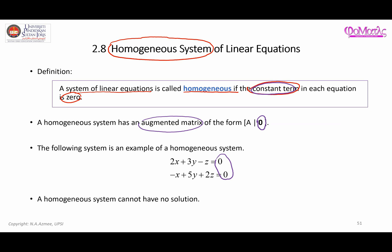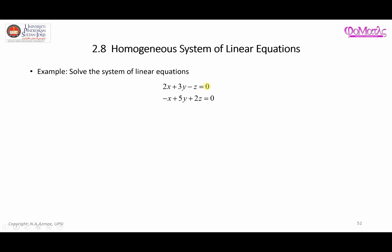When you have a homogeneous system, you will always have some sort of solution. A homogeneous system cannot have no solution — there will always be some answers to the unknown variables. In this example, we are going to look at a given system and try to determine the values of x, y, and z. You can clearly see this part here is all zero, which indicates the system is homogeneous, and that automatically means you will be able to get some answers when you solve it.